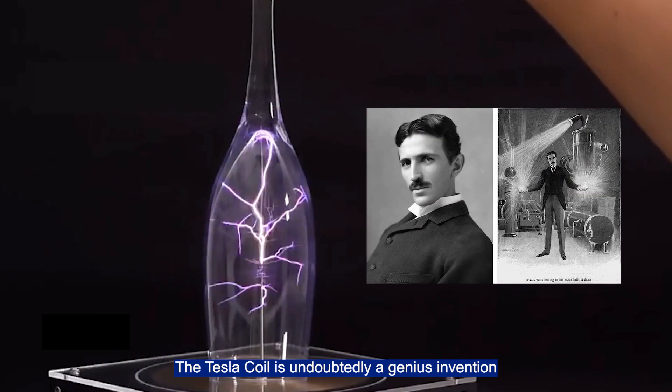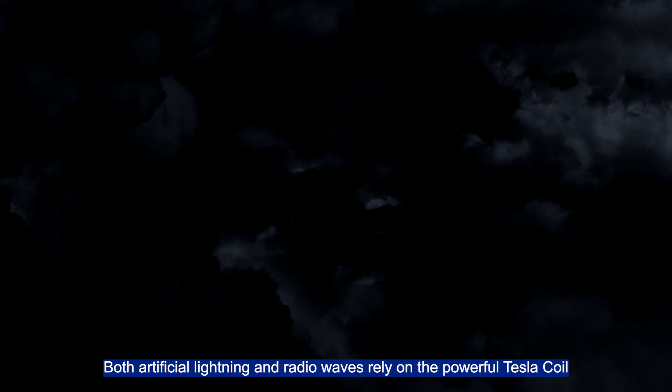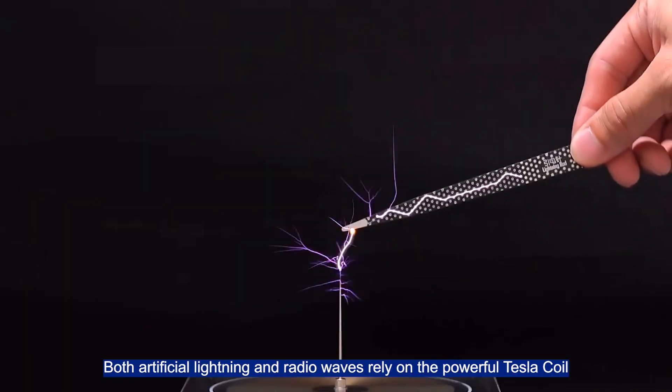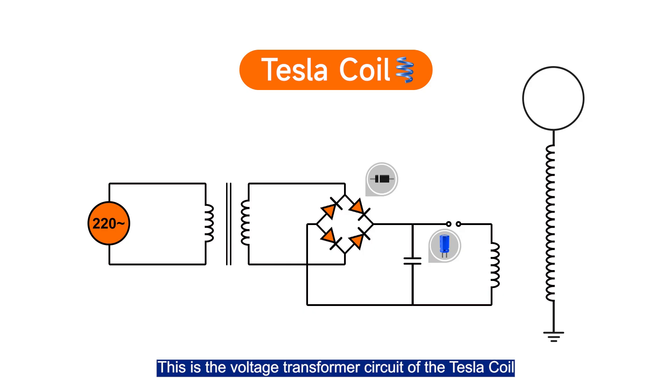The Tesla coil is undoubtedly a genius invention. Both artificial lightning and wireless waves rely on the powerful Tesla coil. This is the voltage transformer circuit of the Tesla coil with an input voltage of 220V AC.